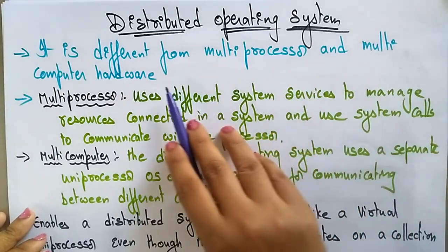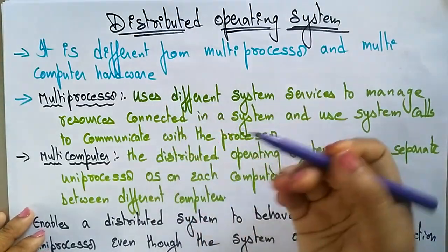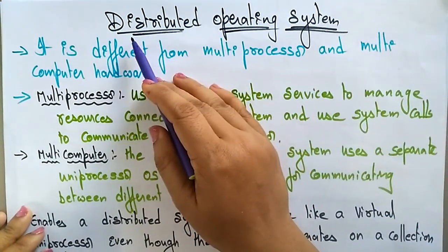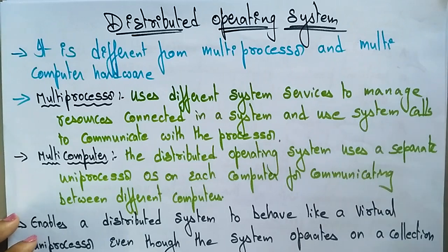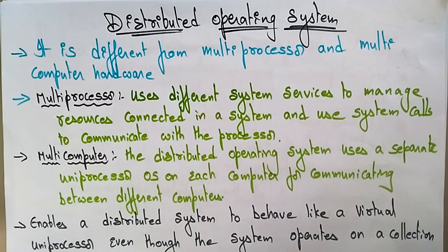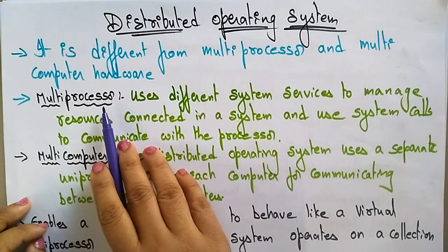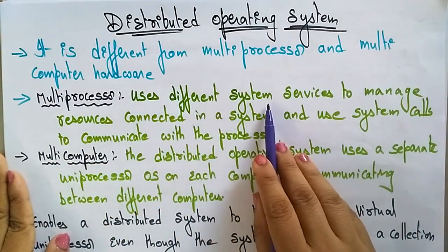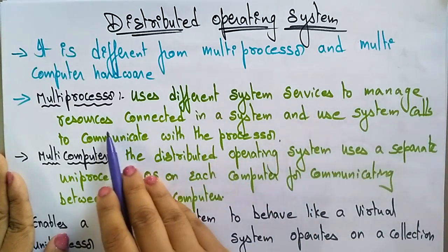Whenever you see the words 'distributed operating system,' you might think it involves multi-processors or multi-computer hardware, but it is not. The multi-processor, multi-computer, and distributed operating system are all different. The multi-processor uses different system services to manage resources connected in a system.